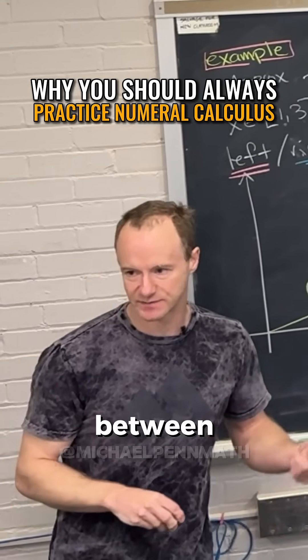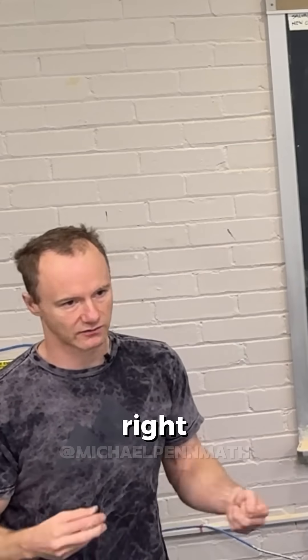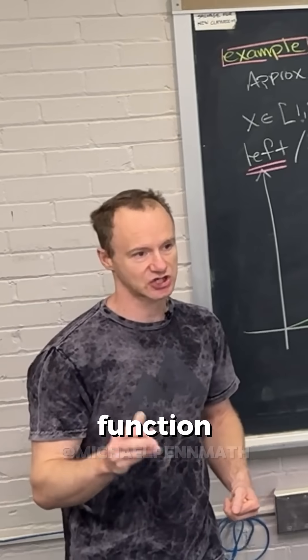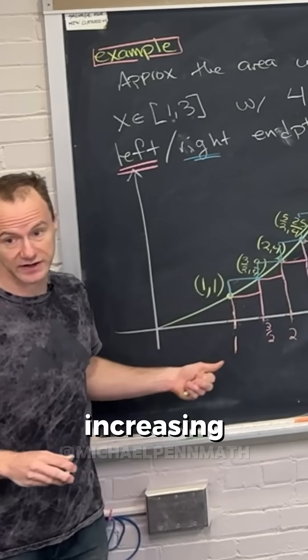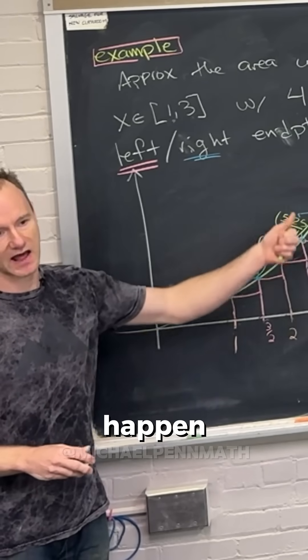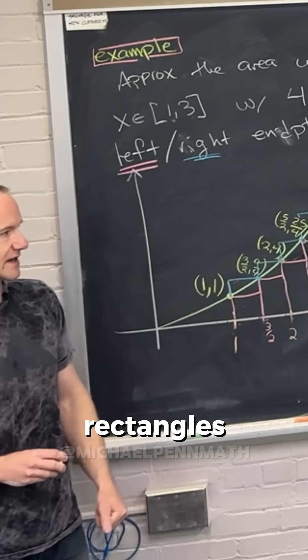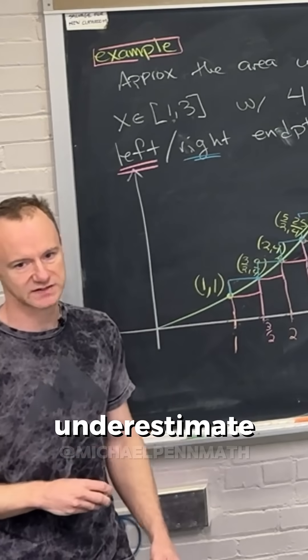Now you can't always say that it's between the left hand and the right hand because you might have some kind of wacky function that is not increasing. The increasingness is what made that happen in this case that was like wavy or something and the way that you picked your rectangles both of them overestimated or both of them underestimated.